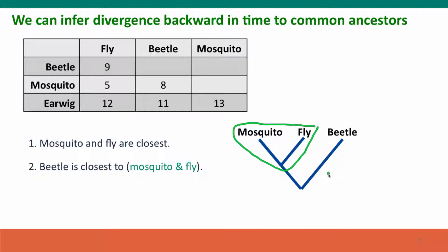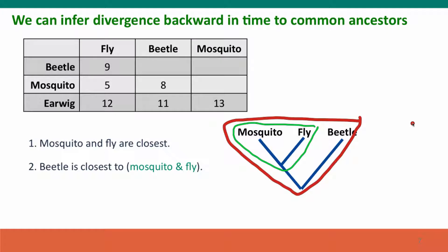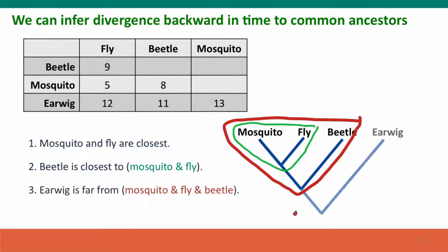That's the next step. Then we're going to treat the beetle, the mosquito, and the fly as one unit and ask how close are they to the earwig? The earwig is the most distant. The distance from the earwig to the fly, to the beetle, and to the mosquito — these are all the biggest numbers, and they're only different by a little bit.